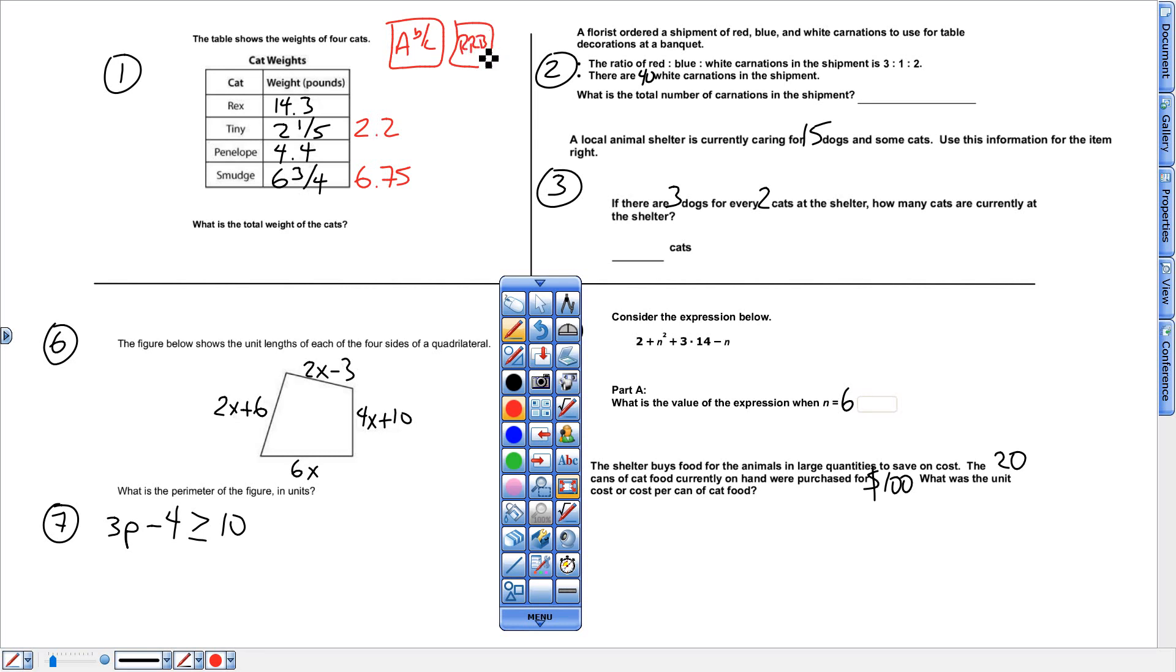And then add them up. So I got 14.3 plus 2.2 plus 4.4 plus 6.75. Use your calculator to accurately add those up. So 14.3 plus 2.2 plus 4.4 plus 6.75.